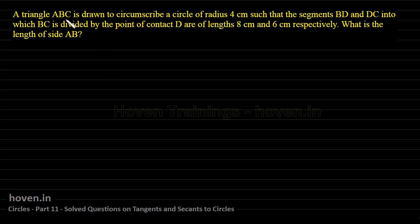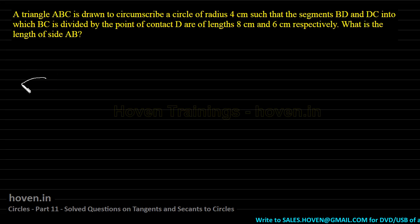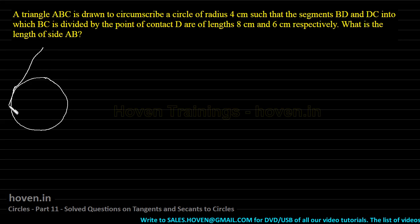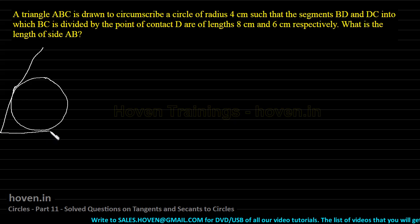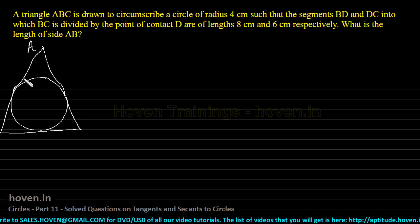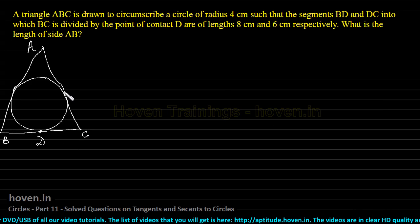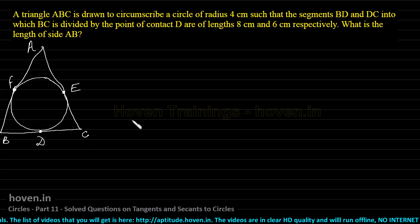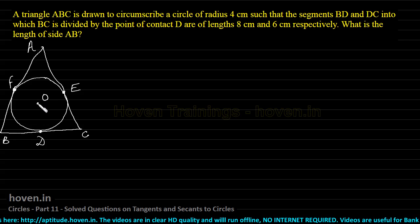A triangle ABC is drawn to circumscribe a circle of radius 4 cm. So what I have is a circle inscribed in triangle ABC. Let us mark the points of contact as D, E, and F, and mark the center of the circle as O.